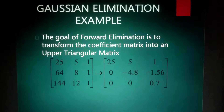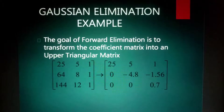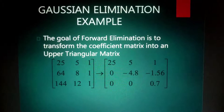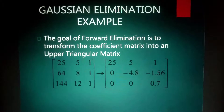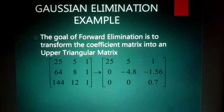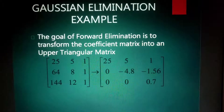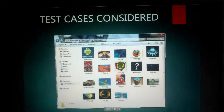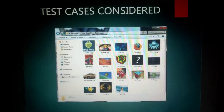Here is one example of Gaussian elimination. The goal of forward elimination is to transform the coefficient matrix into an upper triangular matrix. The example matrix is: [25, 5, 1; 64, 8, 1; 144, 12, 1], which is then converted accordingly.